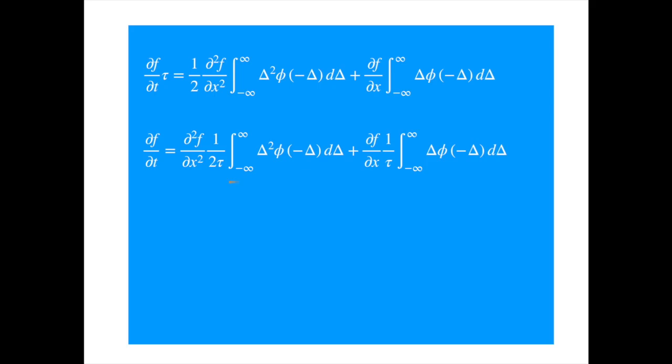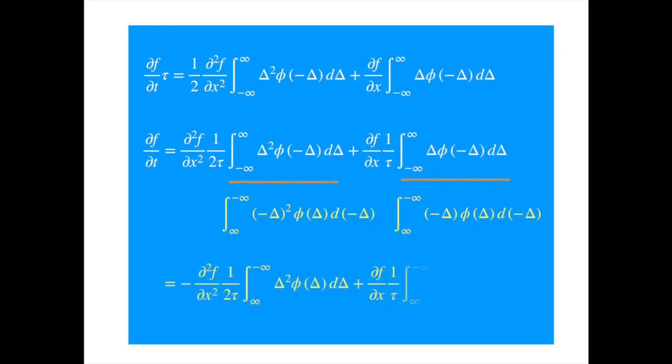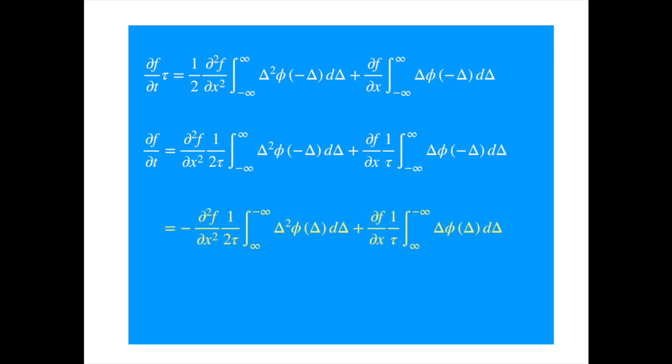So the first integral becomes, where we have to change the integration limits as well, because when delta equals infinity, that means minus delta equals minus infinity, and vice versa. Similarly we can write the second integral as follows, and we substitute these back into the expression. Now we can invert the integration limits, which means we have to change the sign.